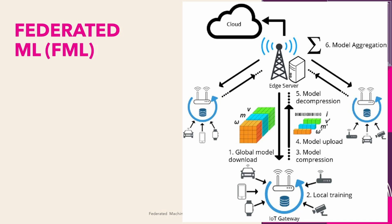In federated learning, the central server sends a copy of an untrained machine learning model to all clients in the network. Each client computes an update to the globally shared central model based on its local training dataset and sends the updated local model parameters to the server. The server aggregates the updates from all clients, updates global model parameters and sends the updated model back to the clients. This process is repeated until the desired results are achieved. A classic example is the Google Keyboard — when the keyboard shows a possible suggestion, your phone locally stores information about the current context and whether you clicked the suggestion or not, which is then used to improve the next iteration of suggestions.